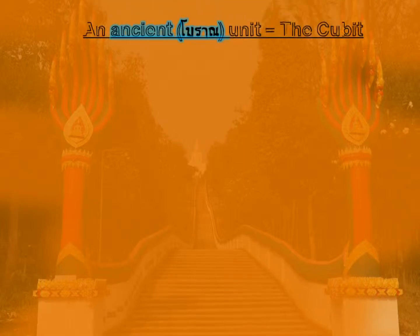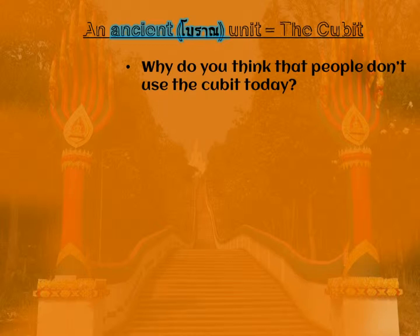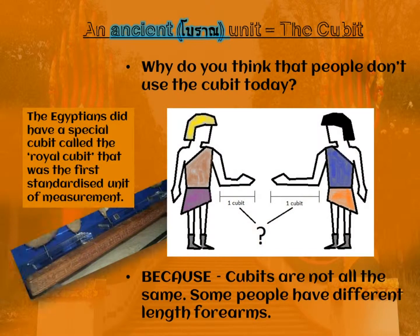So why do people not use the cubit today? The answer should be fairly obvious: it's because cubits are not all the same — some people have different length forearms. The Egyptians did have a special cubit called the royal cubit, which was the first standardized unit of measurement. They tried to make all royal cubits the same, but not everyone had a royal cubit rod, so some people were still using their arms. Of course, arms are not the same, so the cubit did not last.